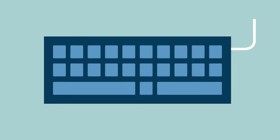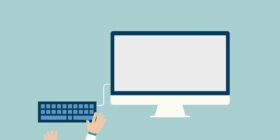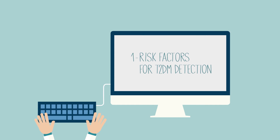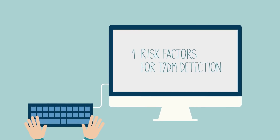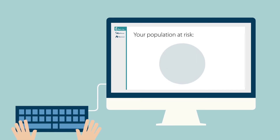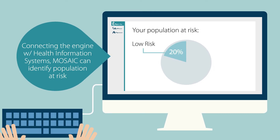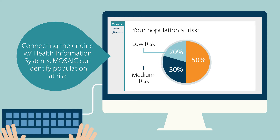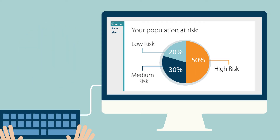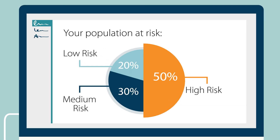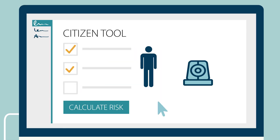The models developed have been integrated into three different MOSAIC tools. The first tool enables healthcare professionals and authorities to identify patients at risk of developing type 2 diabetes — from a general population to the individual patient — through information available at health information systems, bringing to light undiagnosed type 2 diabetes and pre-diabetic states.